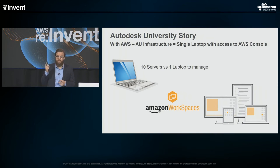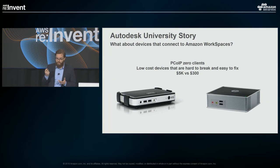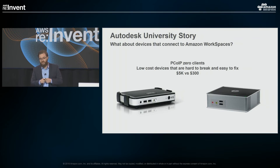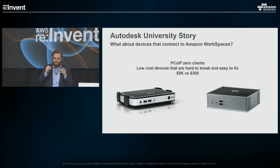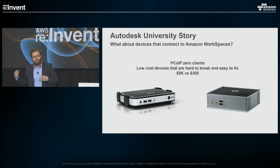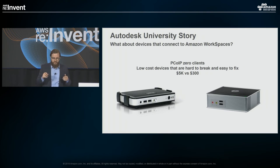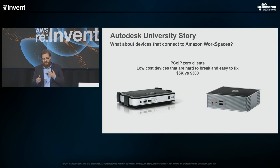Troubleshooting hardware was not an issue this year. We were running with PC over IP zero clients — since they're such small devices, there are a lot fewer parts to break. And if it does break, you just swap it out for a new one. Compare a workstation at around $5,000 versus a zero client at $300. It's much less expensive and has less power requirements, so you're saving on power as well.